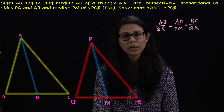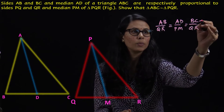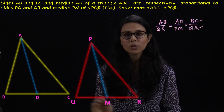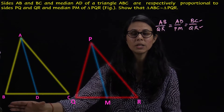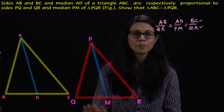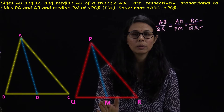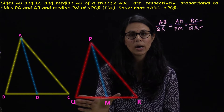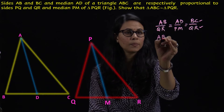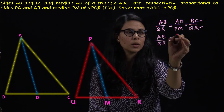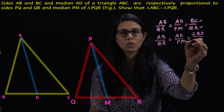We have to prove that triangle ABC and triangle PQR are similar. Now, we can take BC as twice of BD because AD is the median, meaning D is the midpoint of BC, so BC equals twice of BD. Similarly, PM is the median, meaning M is the midpoint of QR, so QR equals twice of QM. I can substitute these BC and QR values, giving AB upon PQ equal to AD upon PM equal to twice BD upon twice QM.